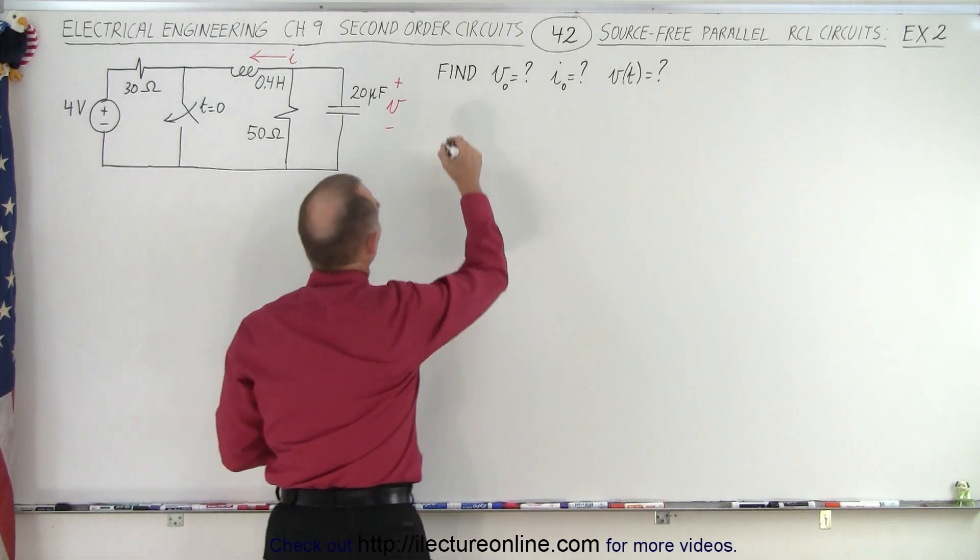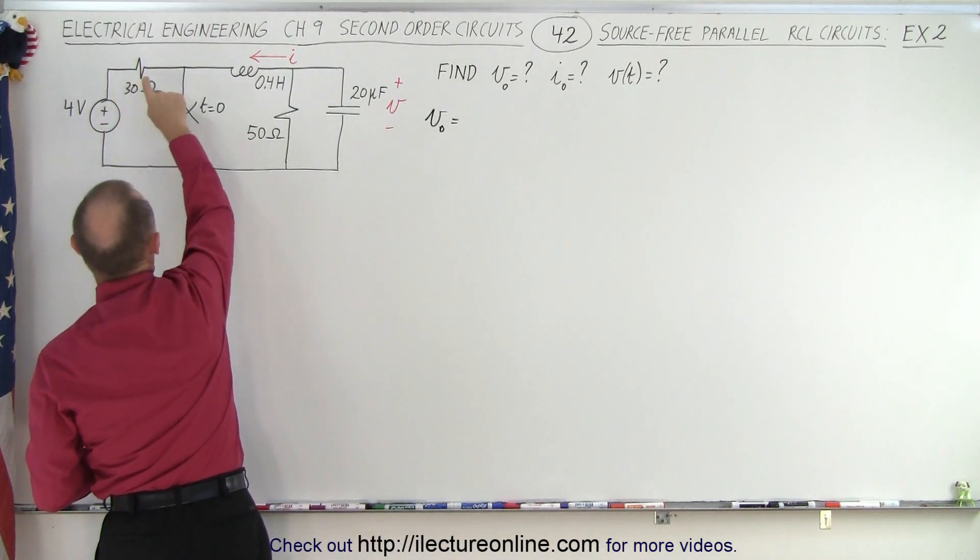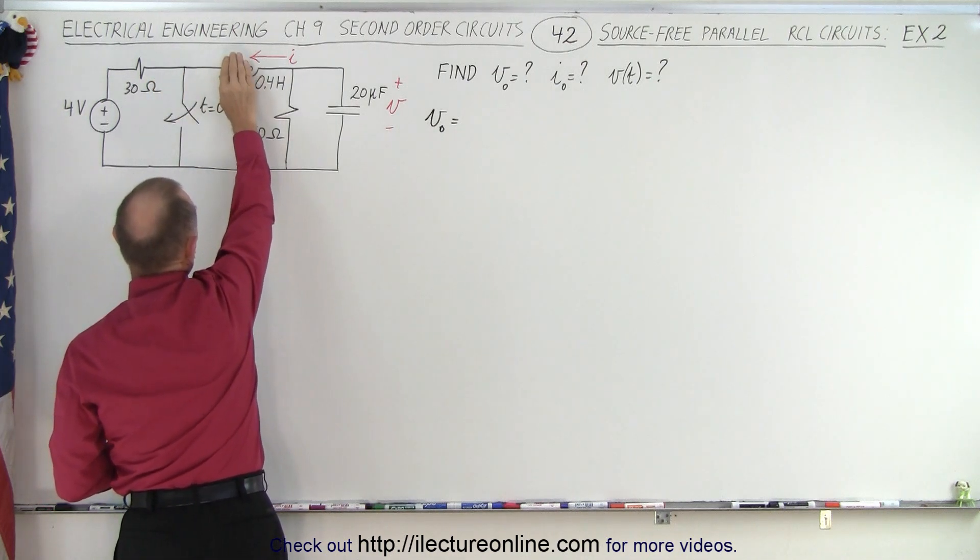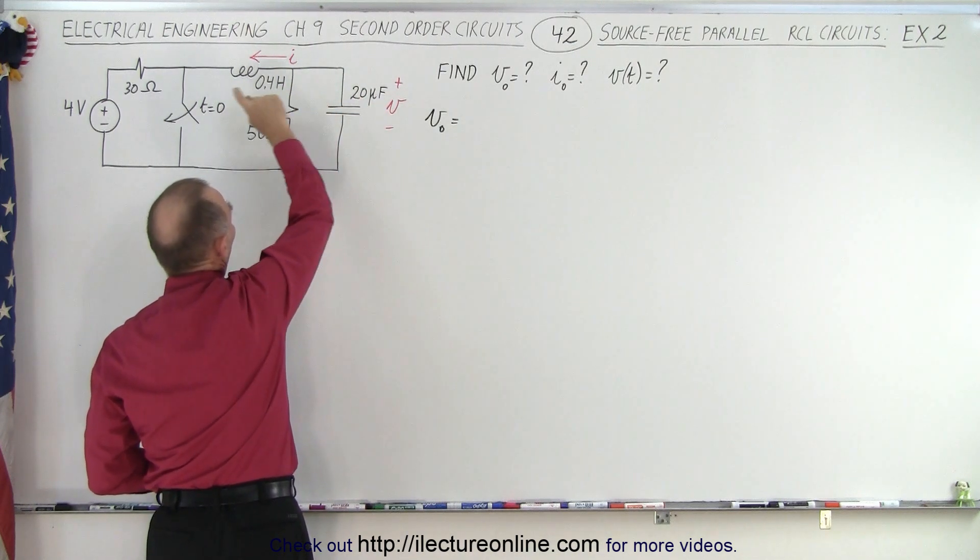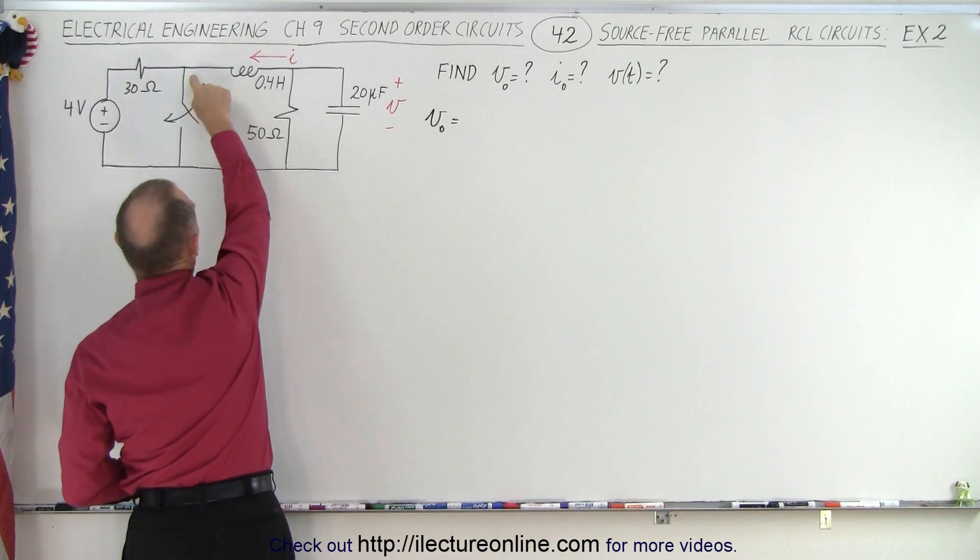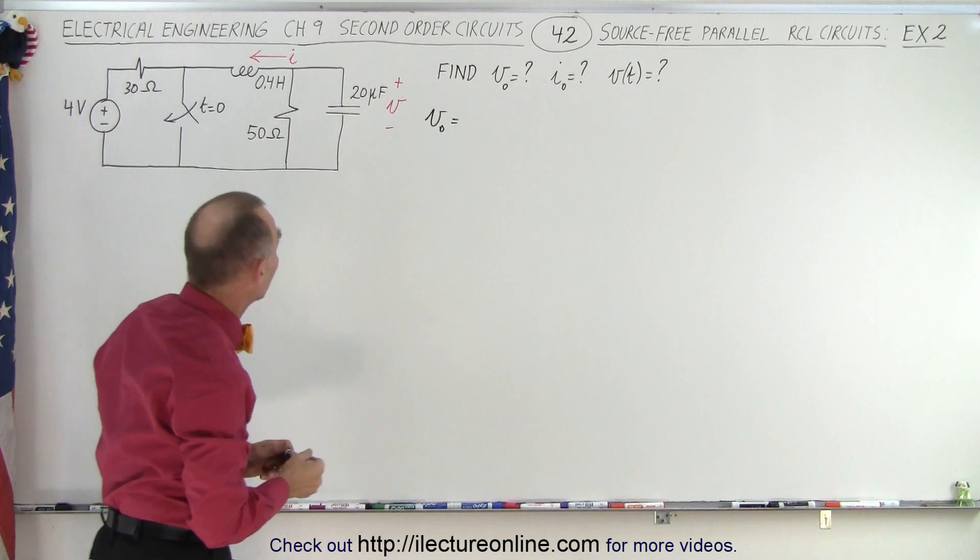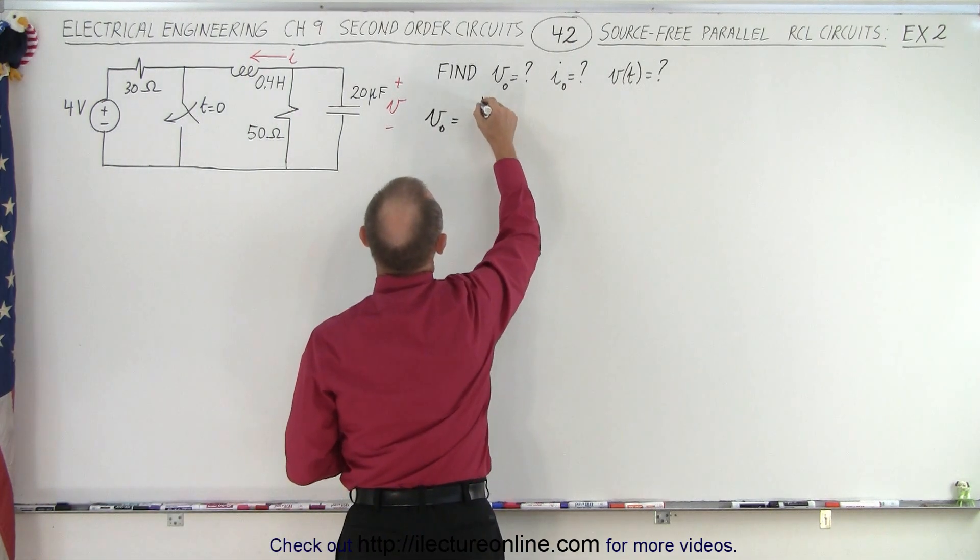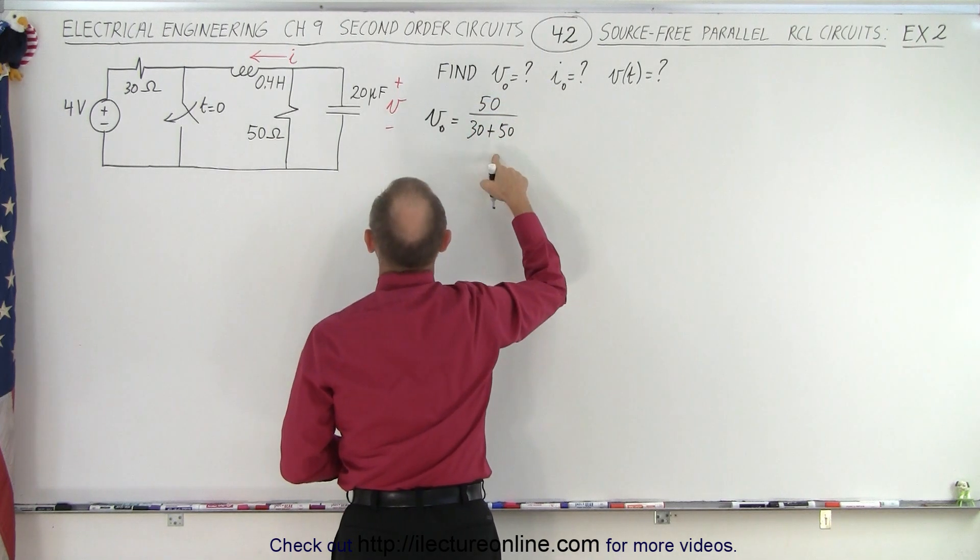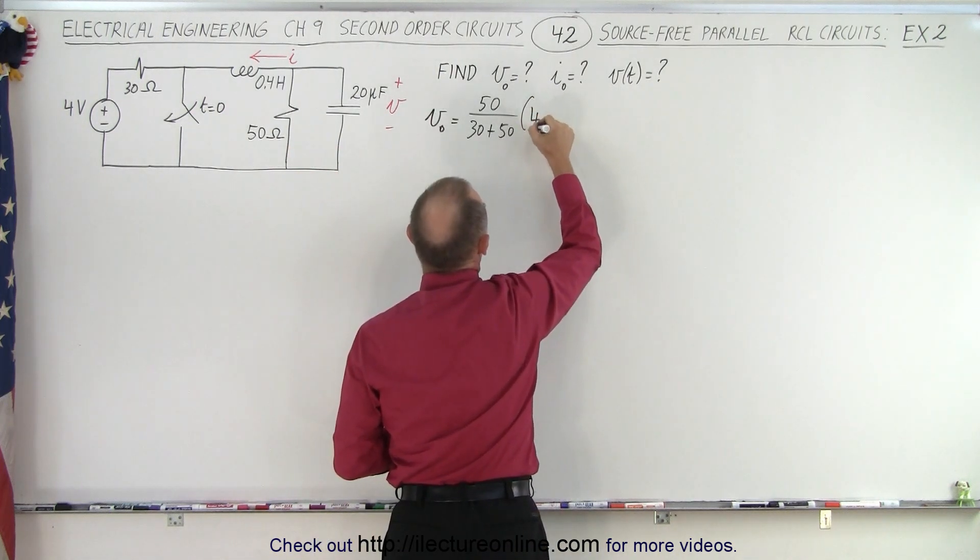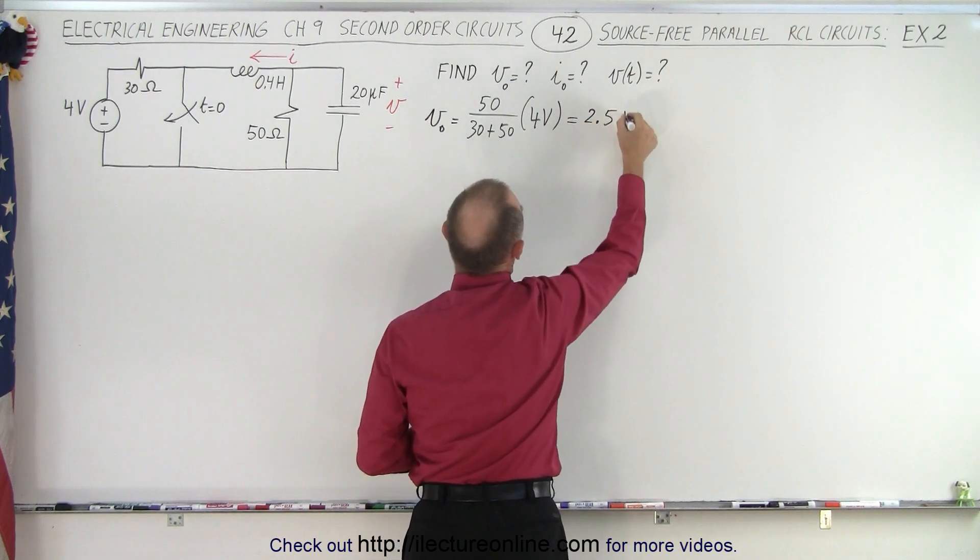So first of all, the initial voltage V initial across the capacitor. Notice, before the switch closes, the current will go through this resistor, through the inductor, which essentially is short at that time, and then through both paths. But once the capacitor is filled up, all the current will go through the 50 ohm resistor, and we have a voltage divider. The voltage across the capacitor will be equal to the voltage across the resistor. So the voltage across the capacitor initially will be 50 divided by the sum of the two, 30 plus 50, multiplied times the voltage of the source, which is 4 volts. So this is 5 over 8 times 4 volts, which is 2.5 volts.